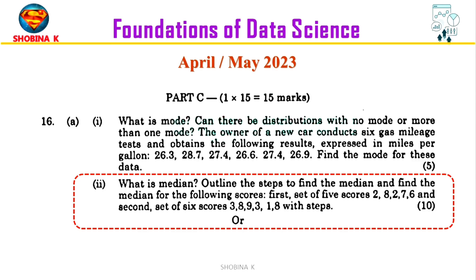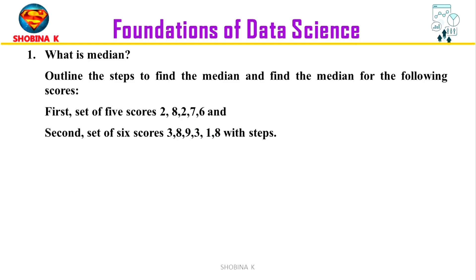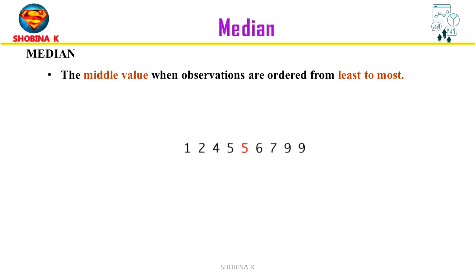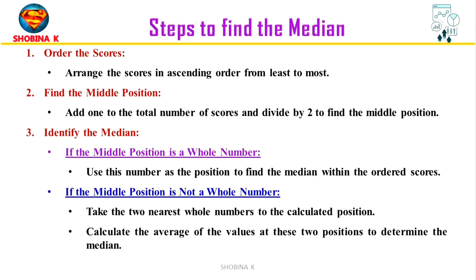First, let's start by understanding what the median is. In statistics, the median is the middle value of a data set when it is arranged in ascending order. The median is a way to find the middle or typical value in a data set. Now let's move on to the steps to find the median.